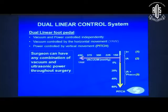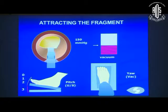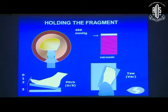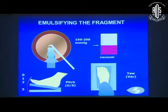The dual linear control system allows vacuum and power to be controlled independently — one in the yaw and the other in the pitch. In this animation, vacuum is in the yaw (horizontal movement) and power is in the pitch (vertical movement). The surgeon can have any combination of vacuum and ultrasonic power throughout surgery: attracting a fragment with lower vacuum of about 150, then impaling it with a burst, then increasing vacuum to 450 in yaw for a good hold, chopping the fragment, and then lowering the vacuum to avoid surge.